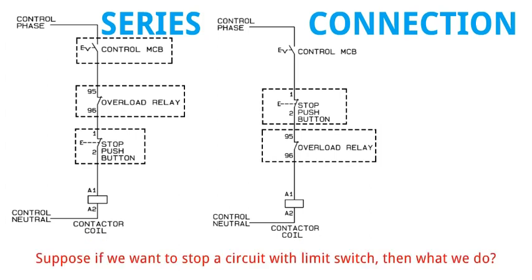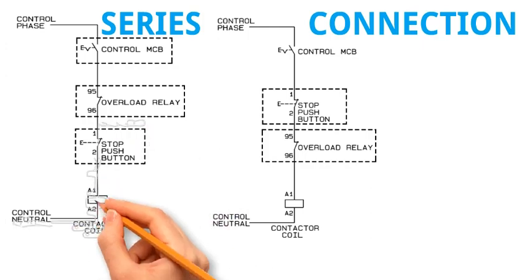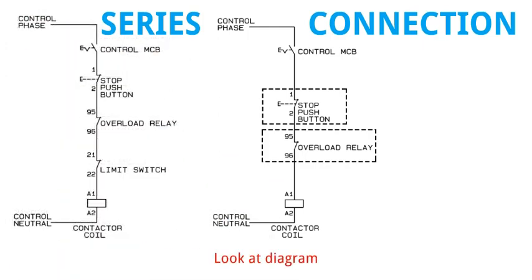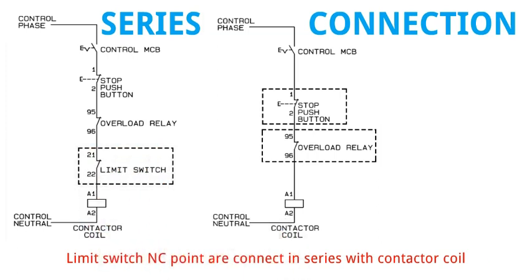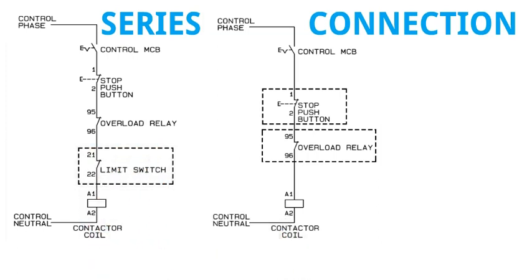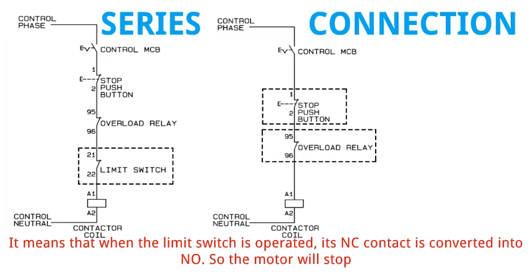Suppose if we want to stop a circuit with limit switch, then what we do? Look at diagram. Limit switch and C point are connected in series with contactor coil. It means that when the limit switch is operated, its NC contact is converted into NO. So the motor will stop.